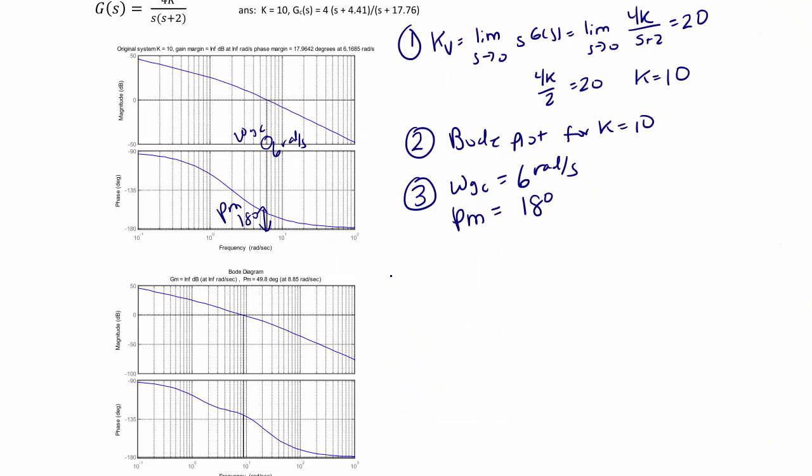Step 4 is to find the compensator phase angle. Phi sub m is equal to the desired phase margin minus the uncompensated phase margin plus our 5 degree correction factor, or 50 minus 18 plus 5, which equals 37 degrees.